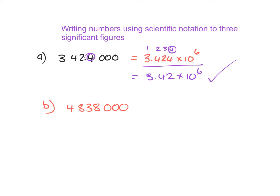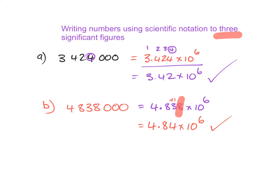Have a look at question B and see if you can write it in scientific notation. Put the video on pause and come back when you're ready. The first thing I'm going to do is write it in scientific notation: 4.838 multiplied by 10 to the power of 6. However, I need to make it to three significant figures. That 8 is greater than 5, so I'm going to add 1 to the 3 over there. My answer is 4.84 multiplied by 10 to the power of 6.